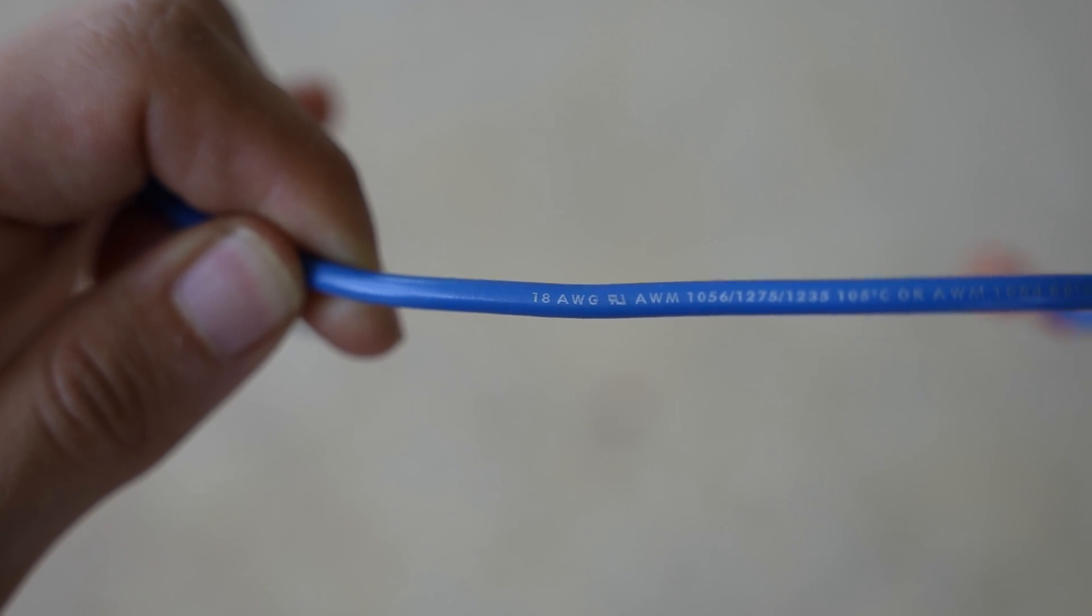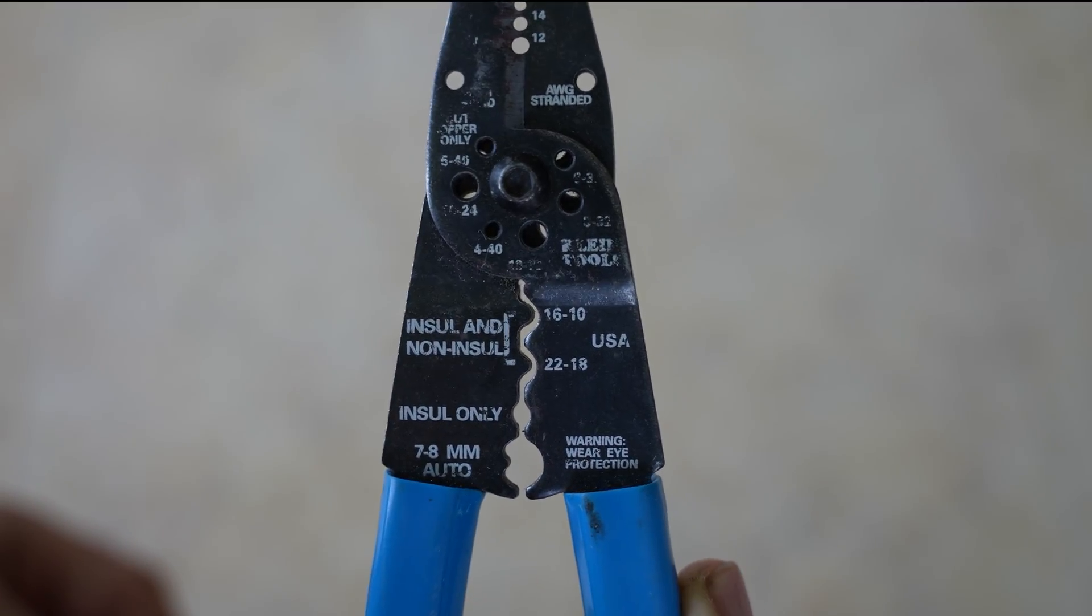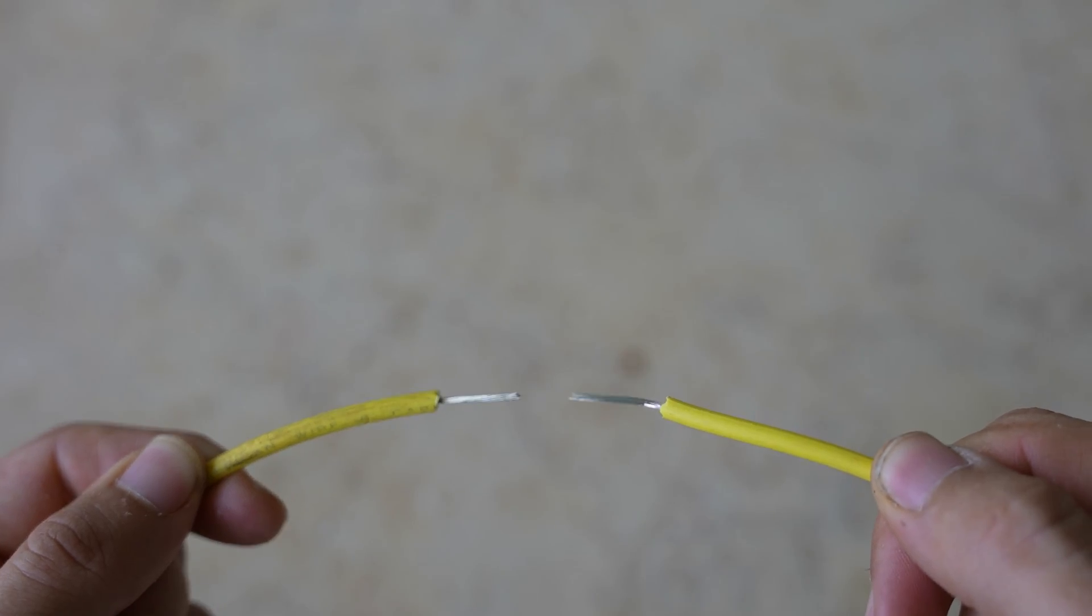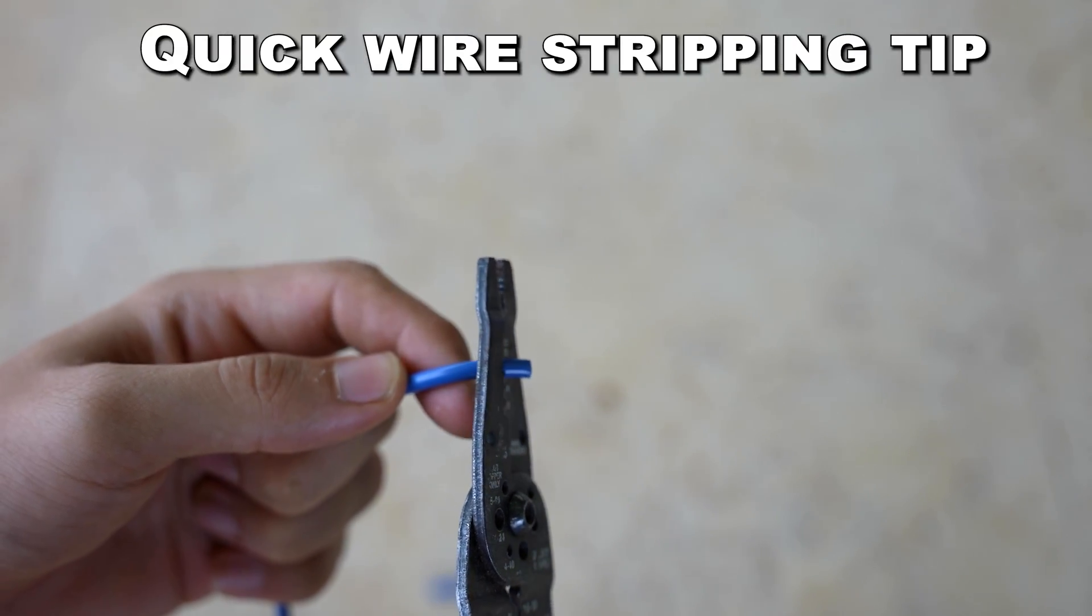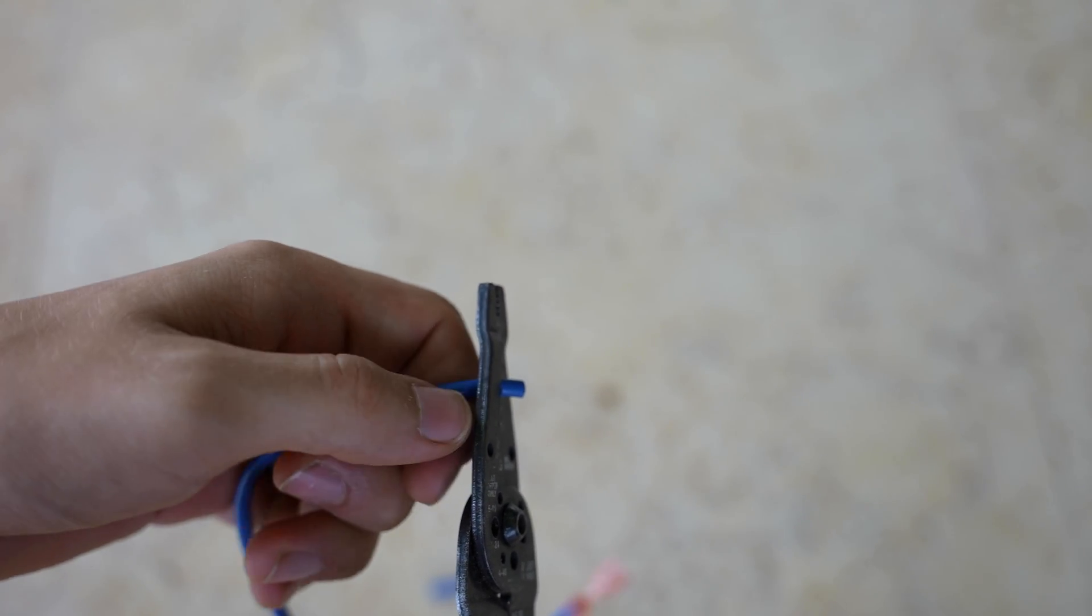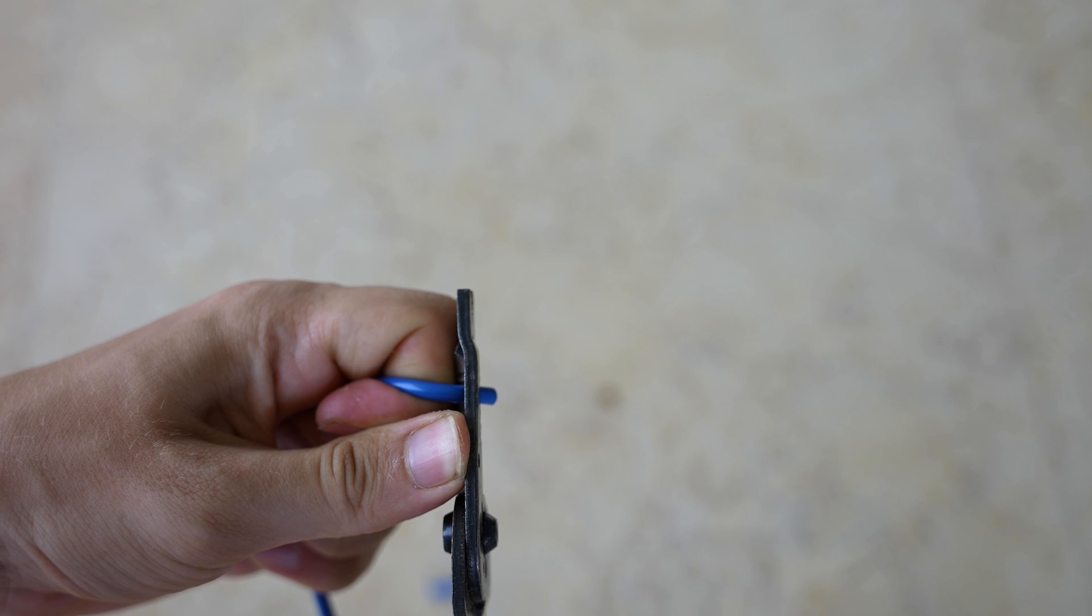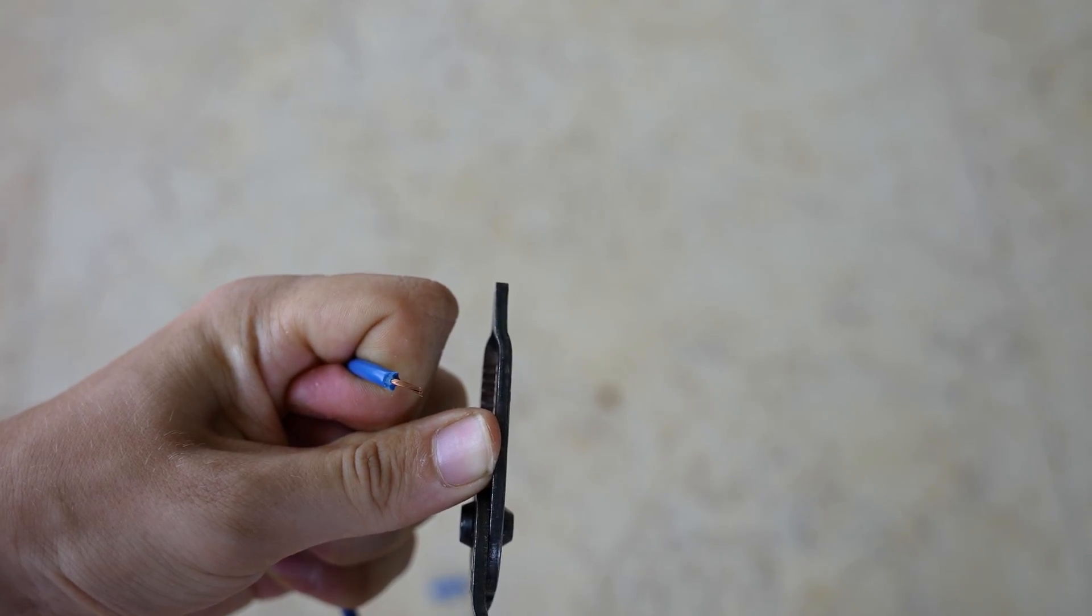Simply find the size of your wire, match it with the number on the pliers, and stripping that wire will be a walk in the park. When you strip wires, after you bite into them, push the pliers with the thumb that is holding the wire instead of pulling on it with the pliers.